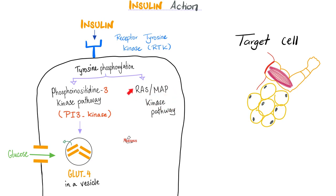The RAS-MAP kinase pathway drives cell division, proliferation, and growth in adipose and skeletal muscle cells. All GLUTs are insulin independent except GLUT4, which is insulin dependent.